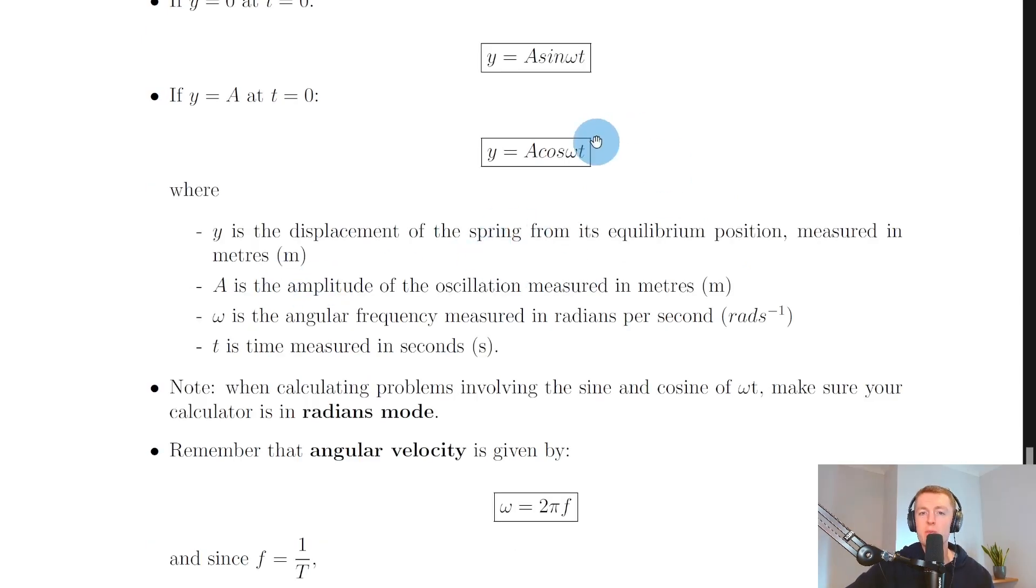What do these symbols mean? Y is the displacement of the spring, or in this case the prong of the tuning fork, but in general the displacement of the object undergoing SHM, measured in meters. A is the amplitude of the oscillation, measured in meters. Omega is the angular frequency, measured in radians per second. And t is time, measured in seconds.